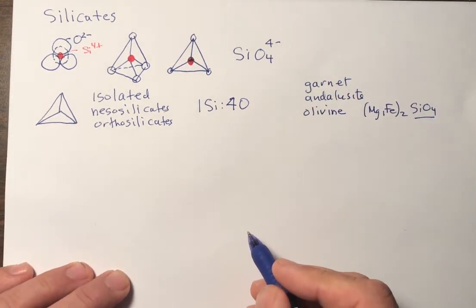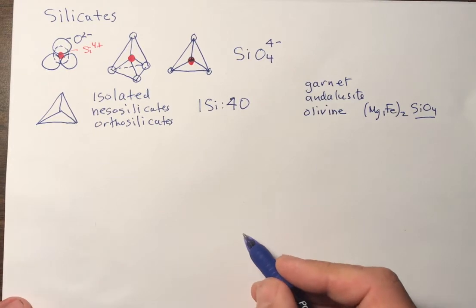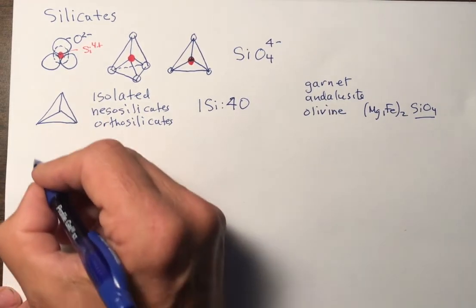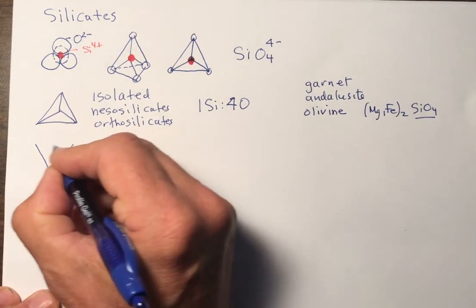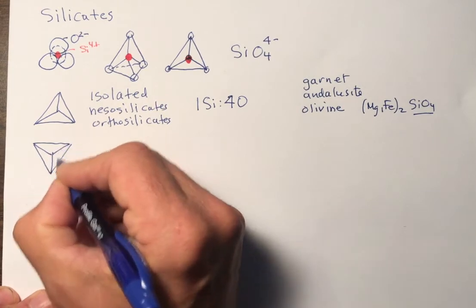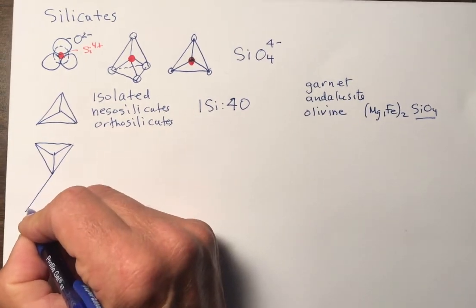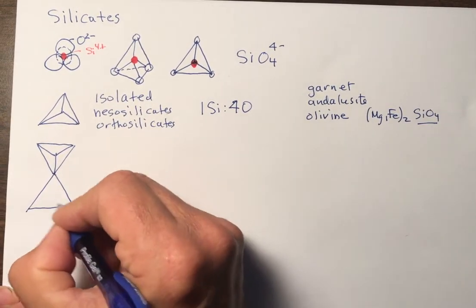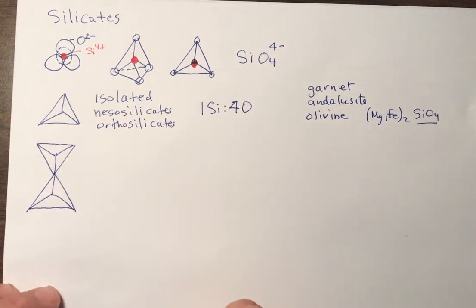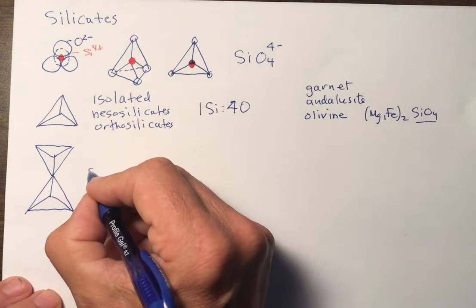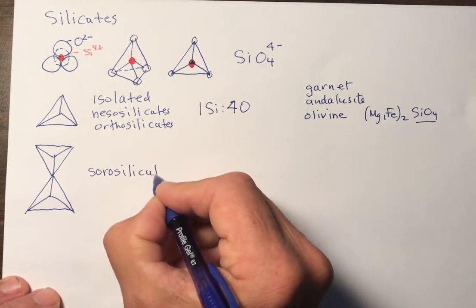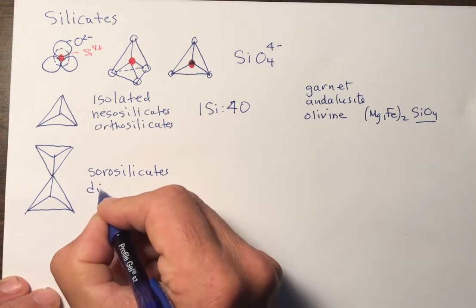So the next group of minerals are where we share one oxygen between two adjacent silicate tetrahedron, like this. Here is one silicate tetrahedron. Here's a second silicate tetrahedron. And you can see they share one oxygen. And these are called sorosilicates or disilicates.